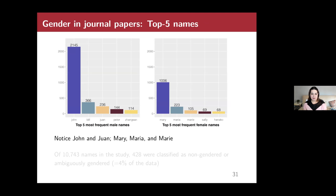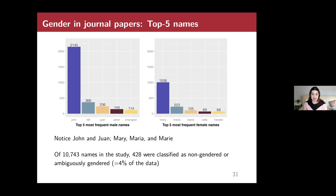Looking at the most common names in example sentences: the top male names are dominated by John, with Juan appearing but far less frequently. The top female names are Mary, Maria, and Marie. These choices are quite limited and not diverse. Of over 10,000 names identified in the study, only 428 — about 4% — were classified as non-gendered or ambiguously gendered, suggesting there is little apparent effort to use gender-neutral naming.